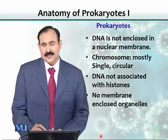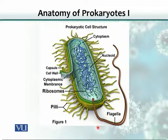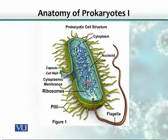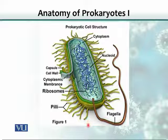Prokaryotes don't have any organelles. This is a cell of the prokaryote — this part here is called a nucleoid, and it houses nucleic acid or DNA. This DNA is basically circular. There are also ribosomes, which are present in both eukaryotes and prokaryotes, and their function is to synthesize proteins for the cell.